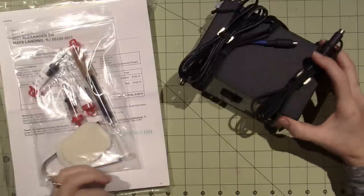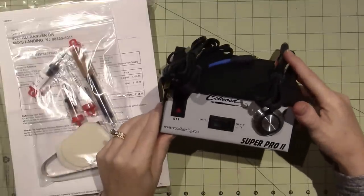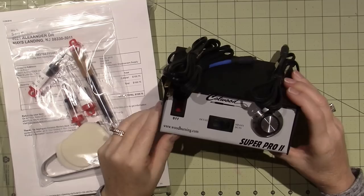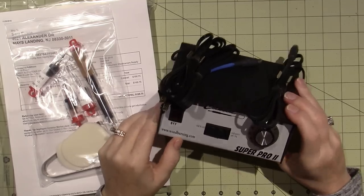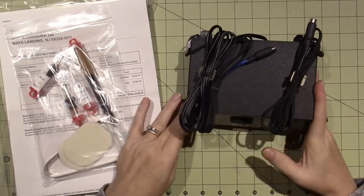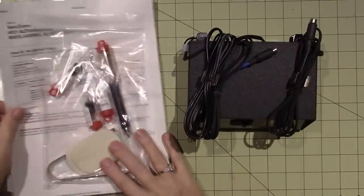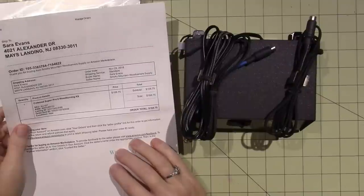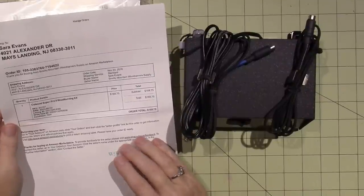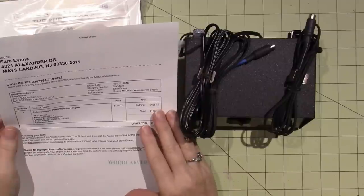Hello, it's Sarah, and I got my Colwood Super Pro 2 pyrography machine. I got mine on Amazon from Smokey Mountain Woodcarver Supply. It was $168.75.